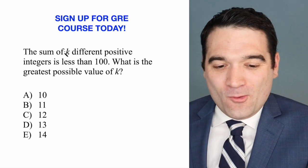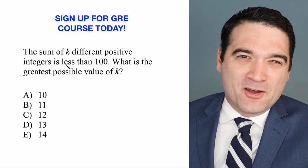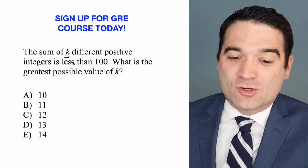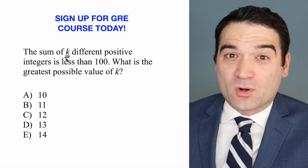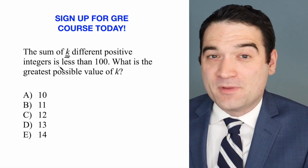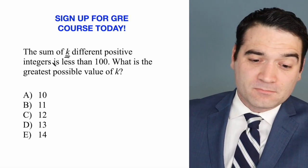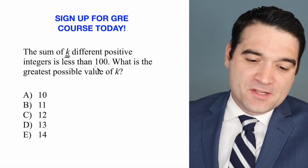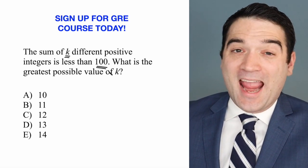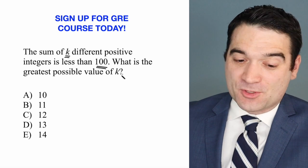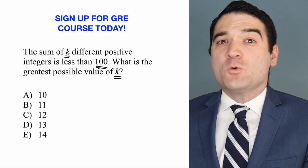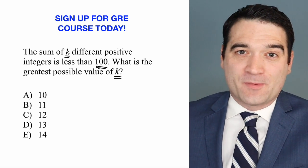The hardest part of this question is understanding what it's asking. k describes the number of numbers that we have. So if we have five numbers, then k would be five. And we want all of these numbers to add up to something less than 100. The most important part is we want to make k as big as possible — we want the most number of numbers that we can have.